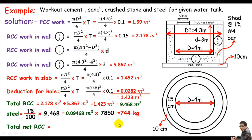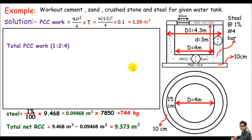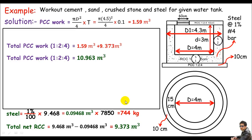To calculate cement, sand, and crushed stone, I need the net RCC work excluding steel. I subtract the steel volume from the total RCC: 9.468 − 0.09468 = 9.373 cubic meters. This remainder is treated as equivalent PCC. Adding the actual PCC base of 1.59 m³ gives total PCC work = 1.59 + 9.373 = 10.963 cubic meters.